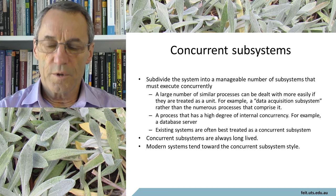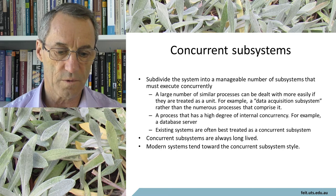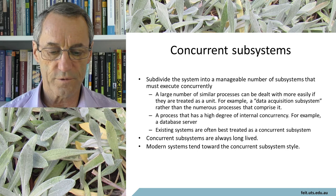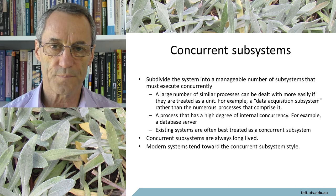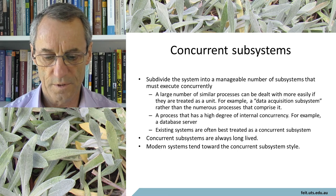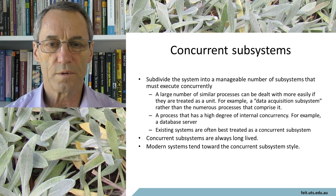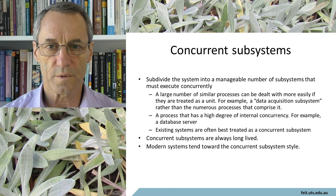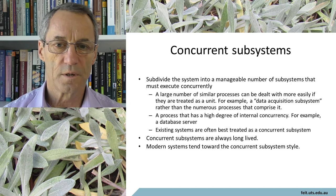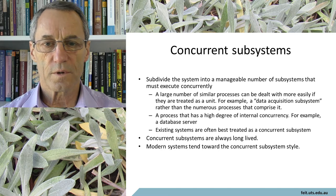A large number of similar processes can be dealt with more easily if treated as a unit — for example, a data acquisition subsystem rather than the numerous processes that comprise it. A process that has a high degree of internal concurrency, for example a database server, is a good candidate to be a subsystem of itself. Concurrent subsystems tend to be fairly long-lived — they fire up and continue running for as long as the system is running, as opposed to something which might start up and shut down on demand. Modern systems tend toward the concurrent subsystem style.